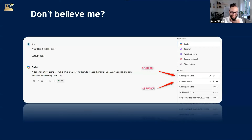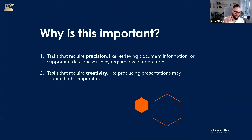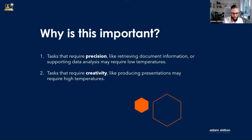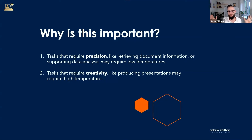Why is this important? At some point you might want to start building bots into your organization that work with your data. To do this, you need to decide whether it's a task that requires precision — like retrieving document information or supporting data analysis — or if it's a task that requires creativity, like producing presentations. Precise: low temperatures. Creative: high temperatures. These are guidelines rather than hard and fast rules. I did all that predictive analytics code generation in creative mode — in theory precise mode should work for code since you don't want variability, but during troubleshooting, creative mode enabled Copilot to look at problems differently and suggest different responses.